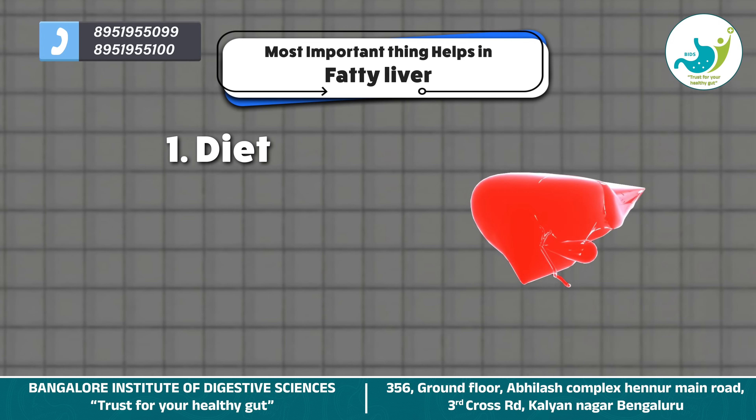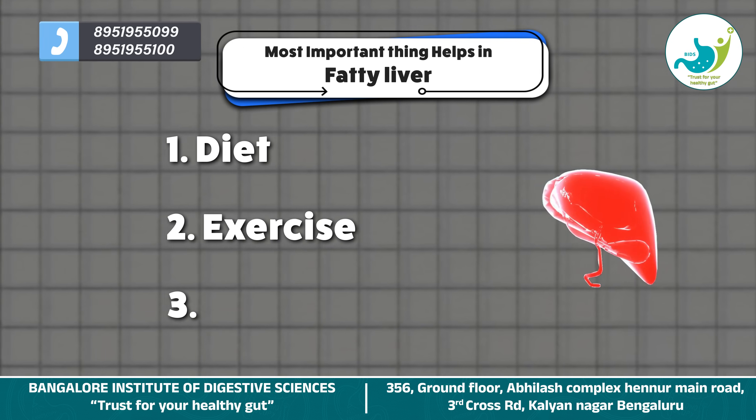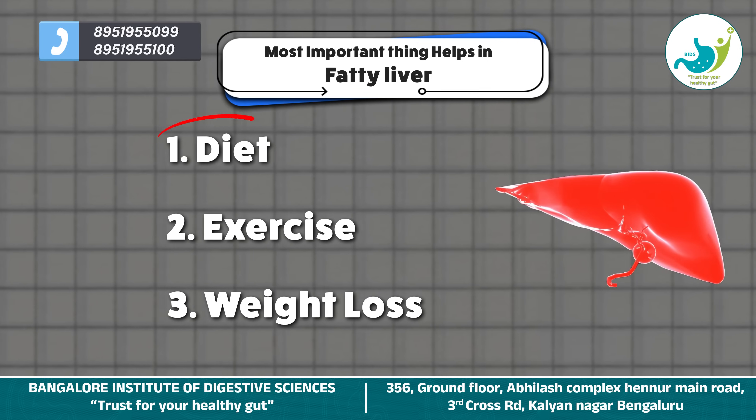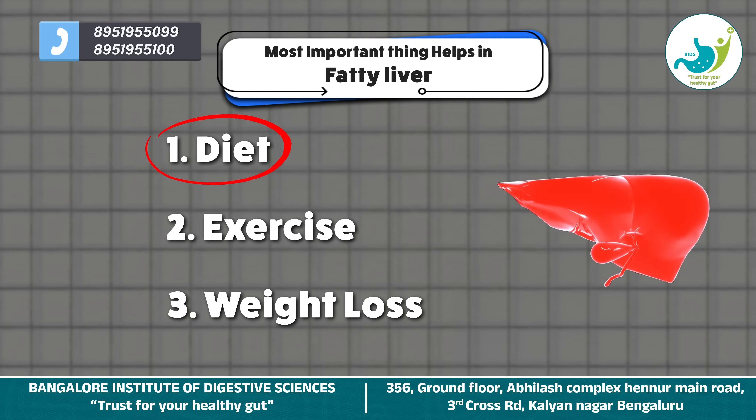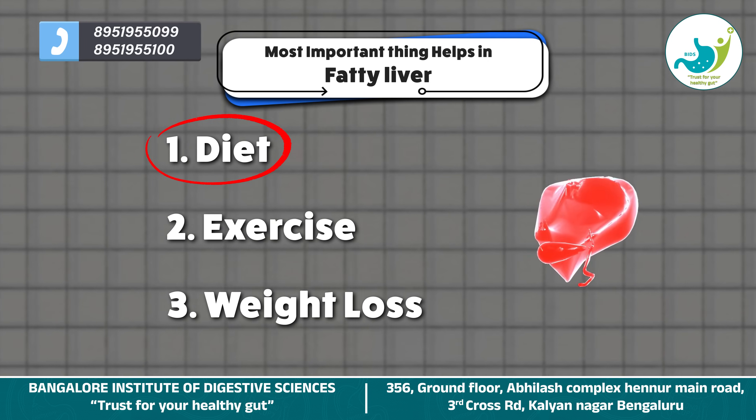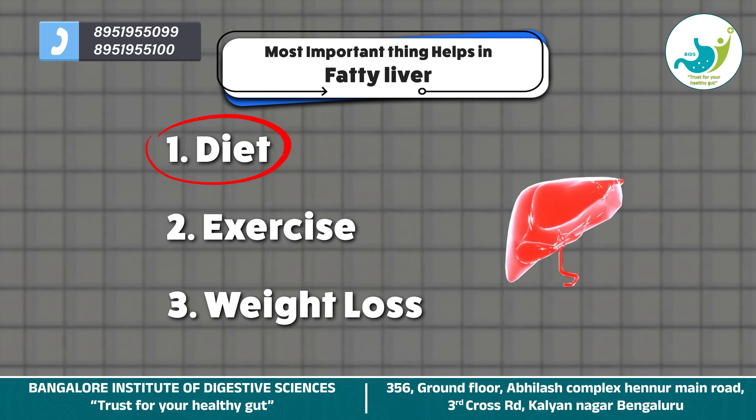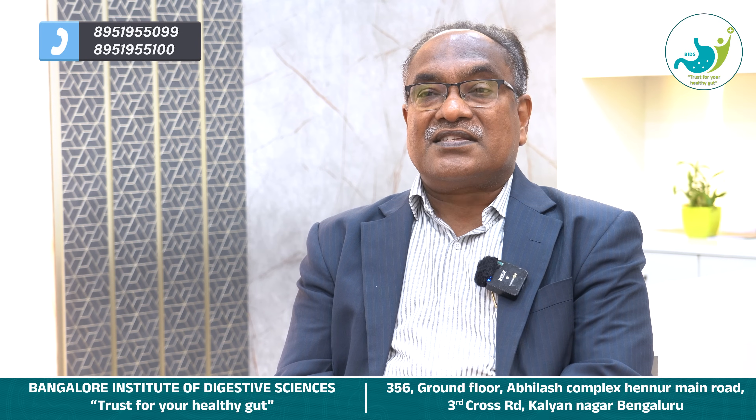Prevention is better than cure. How do we prevent or reverse fatty liver? One is by diet, second is by exercise, and third is by weight loss. Diet is very important — both what we eat and when we eat. There is something called the circadian rhythm; we have to eat according to sunlight. If you eat your dinner early, by 6 PM, the chances of fatty liver are less.